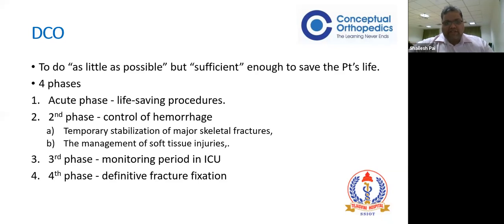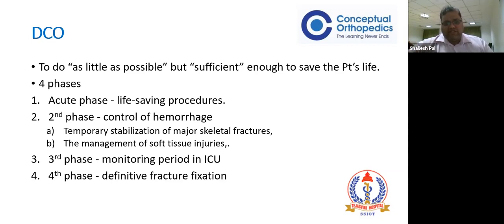There are four phases. In the acute phase, we do only life-saving procedures - if a procedure is not carried out, the patient will die immediately, such as a bleeding artery or a pelvic injury with a bleeding vessel requiring external fixator and tamponade or artery embolization. In the second phase, control of hemorrhage which is minor - indirect control by temporary stabilization of major skeletal fractures only, not external fixators to every part. At the same time, management of soft tissue injuries occurs simultaneously - the bone is not separate from the soft tissues. In the third phase, the patient is monitored in ICU, resuscitated, and physiological parameters restored to normal. Then the fourth phase is definitive fixation of fractures.